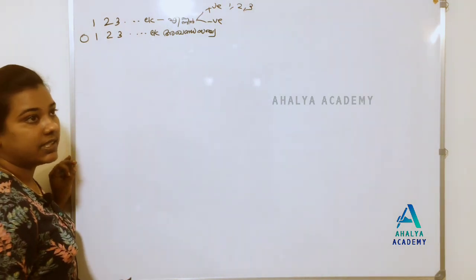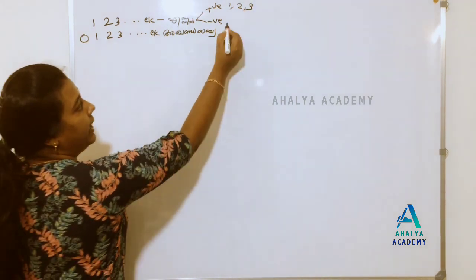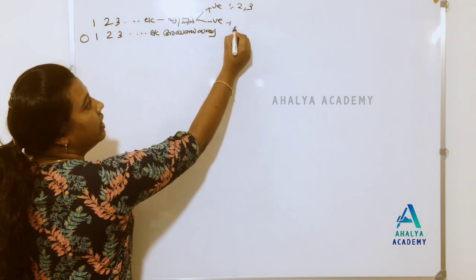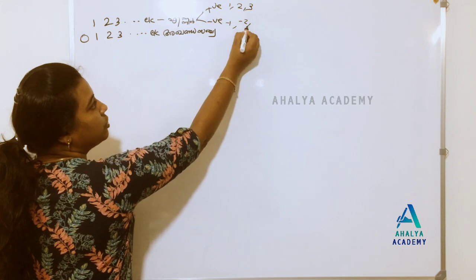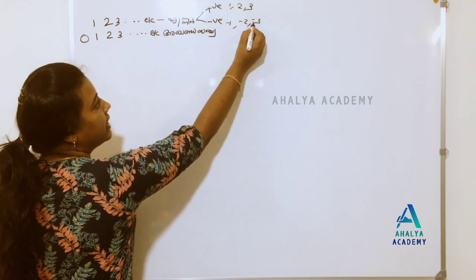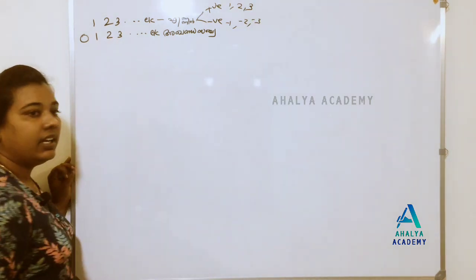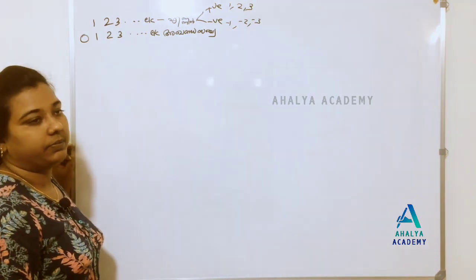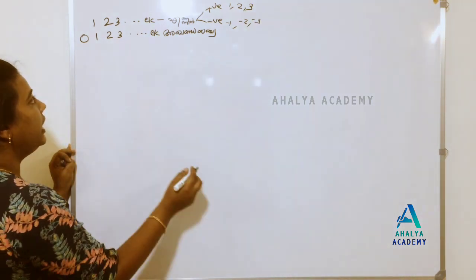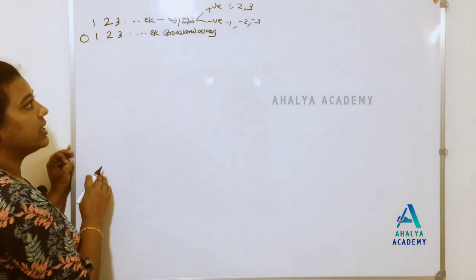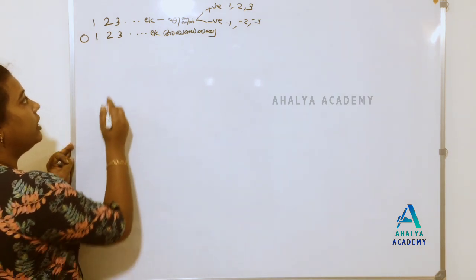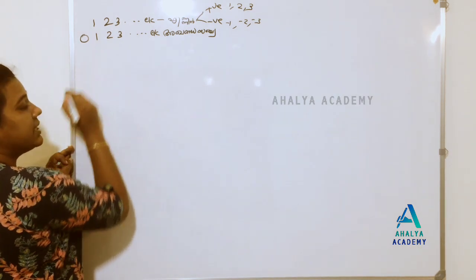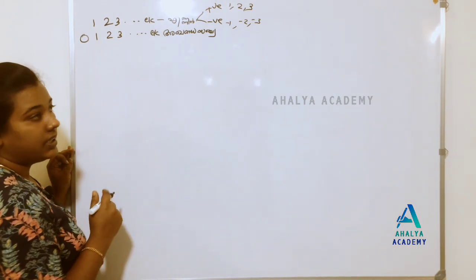Negative numbers are minus 1, minus 2, minus 3. This is the classification of positive and negative numbers.